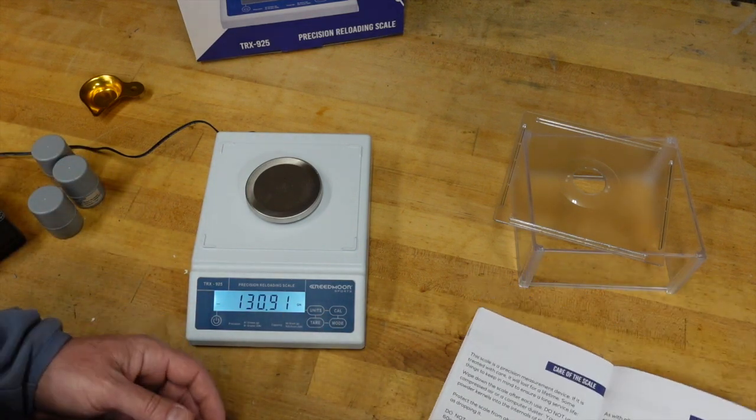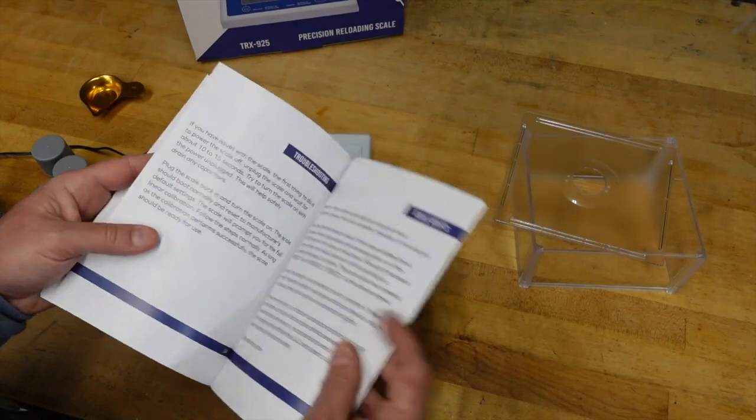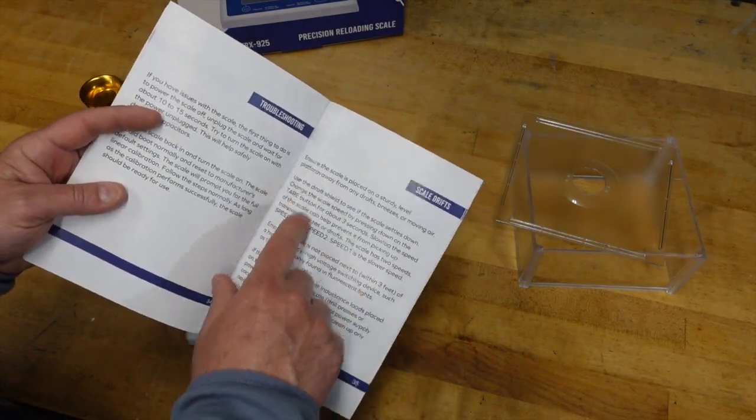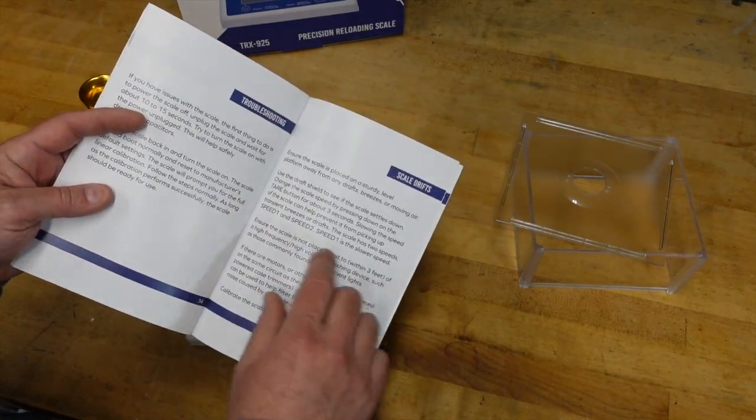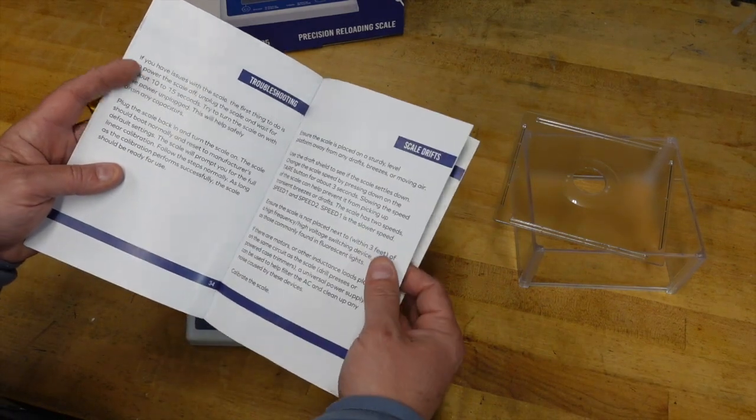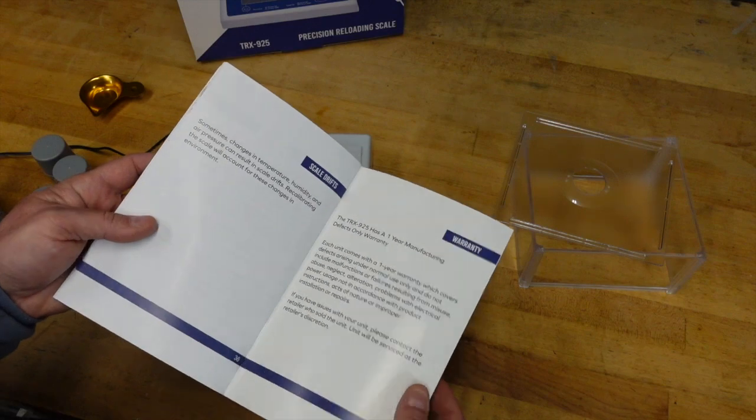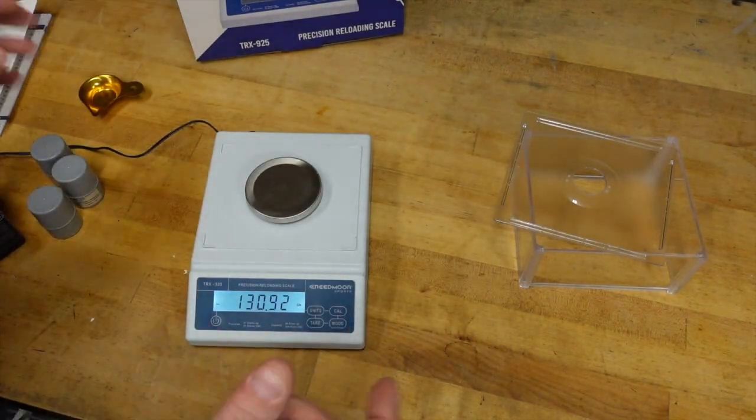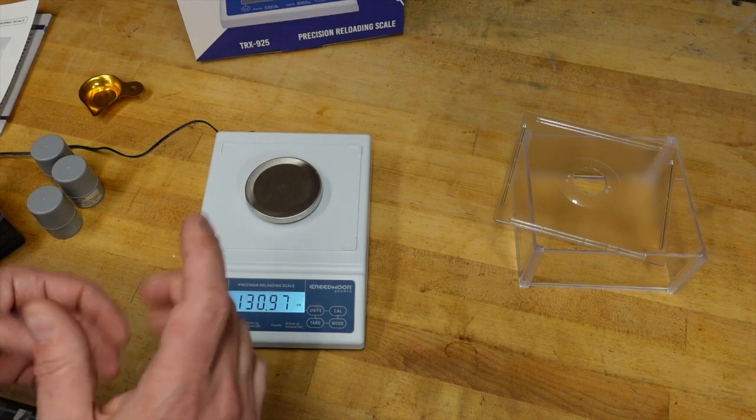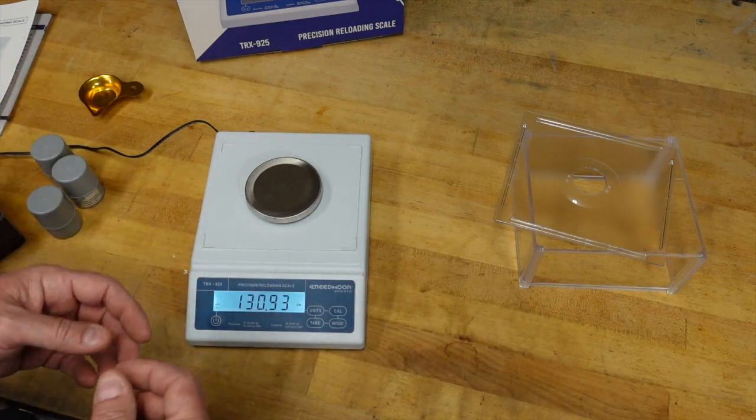Aside from that, they just have your typical how to care for it. How to ensure that if you're getting scale drifts because of something you can do different speeds of speed one and speed two. But again, I really wasn't seeing that. I saw a little bit of maybe humidity or temperature swings that would move it just a hair. Otherwise it wasn't bad at all.